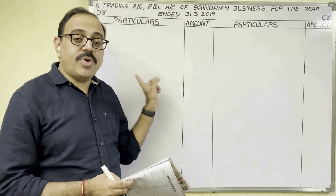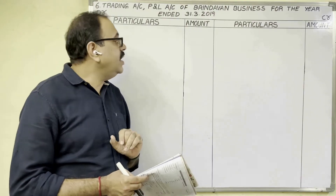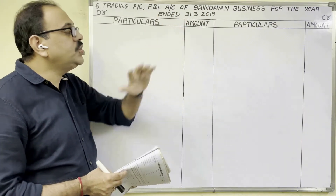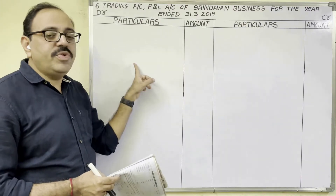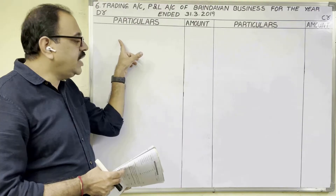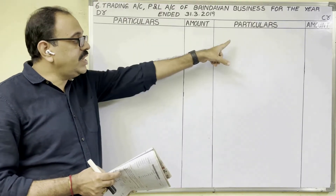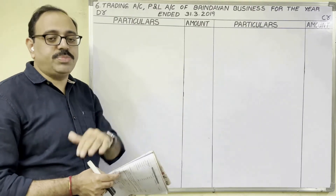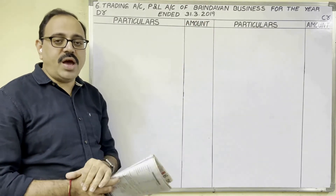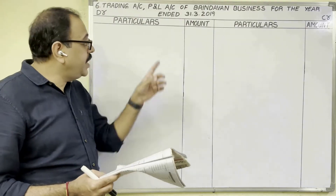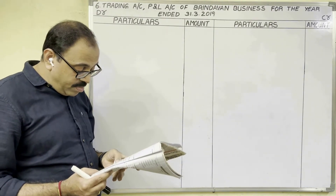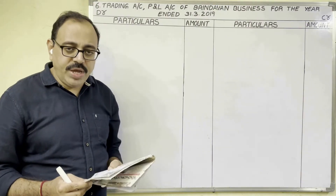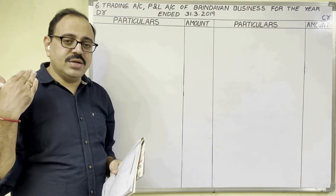We will prepare a combined Trading Account and Profit and Loss Account of Brindavan Business for the year ended 31st March 2019. Trading account debit side: direct expenses; credit side: direct incomes. Direct expenditure means manufacturing-related expenditure. We start with opening stock — opening stock is not given in this question, meaning in the previous year there was no closing stock.